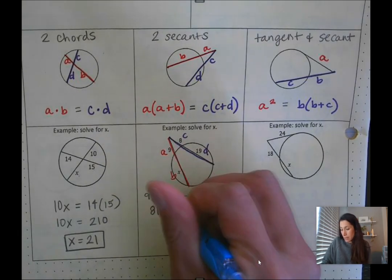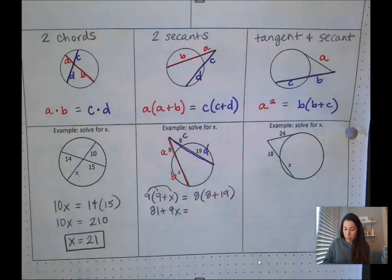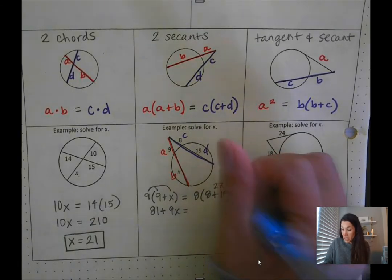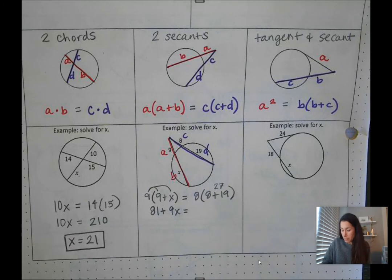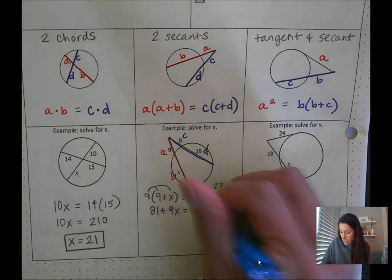And then here we can do this in one step. 8 plus 19 we could have wrote that as 27. So it's really just 8 times 27. And this is going to be 216.